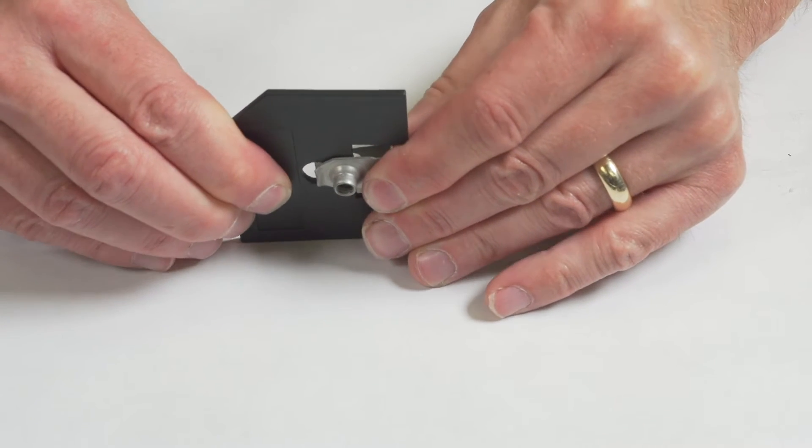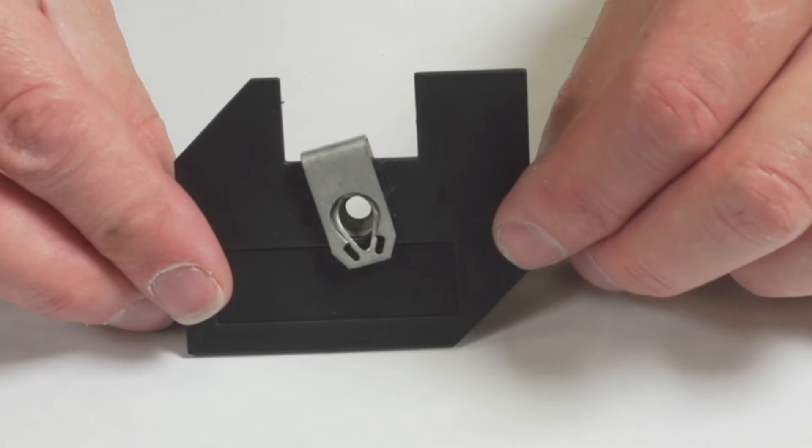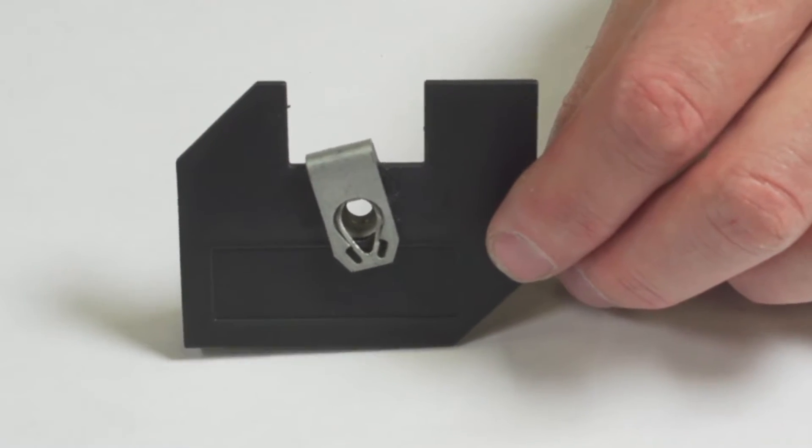To assemble, the part is pushed on until the panel retaining feature engages in the mating hole. Lead-ins on legs help to ease insertion.